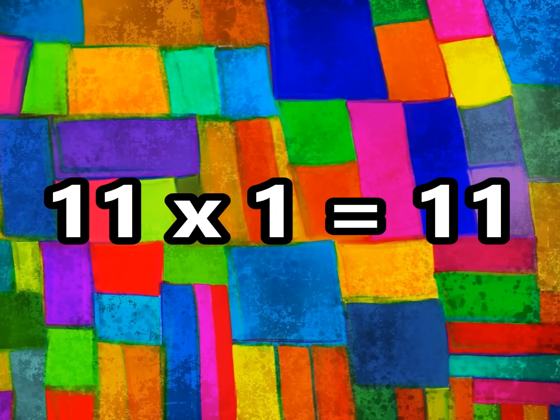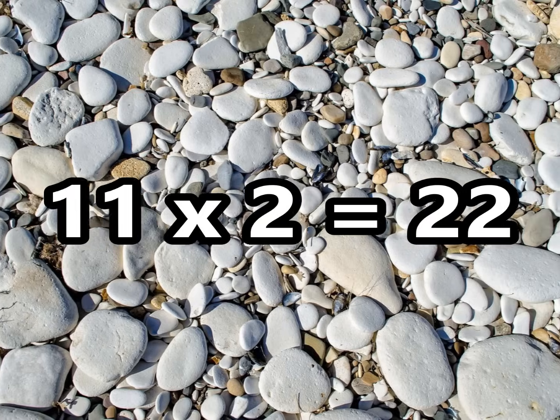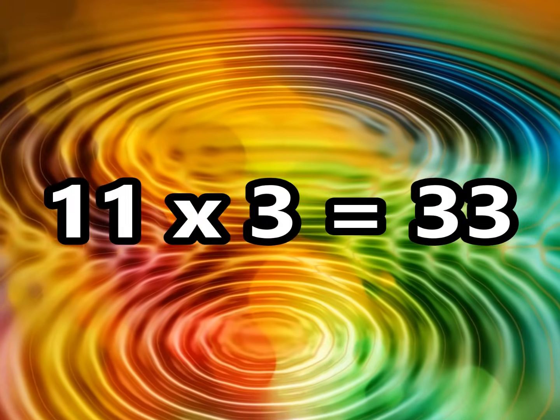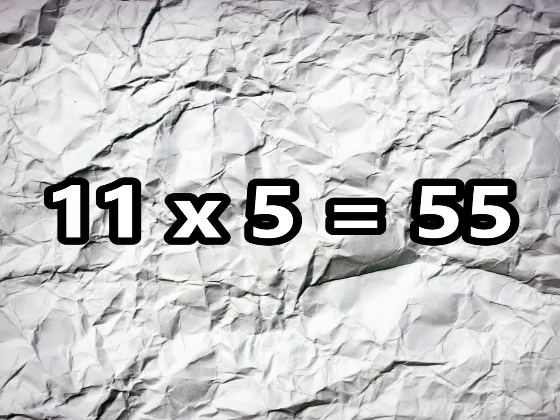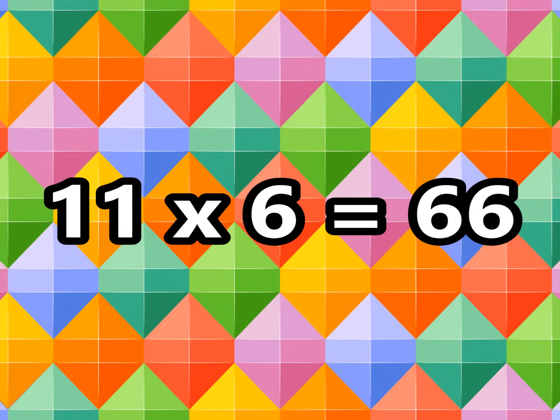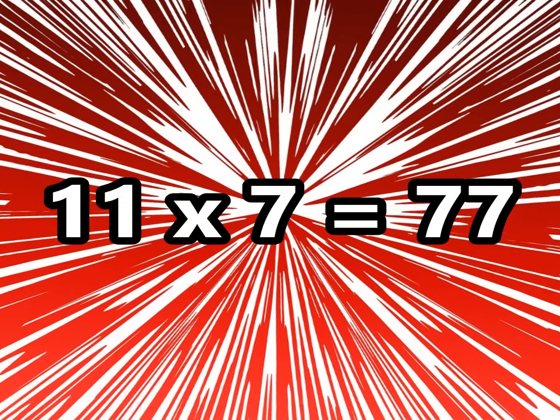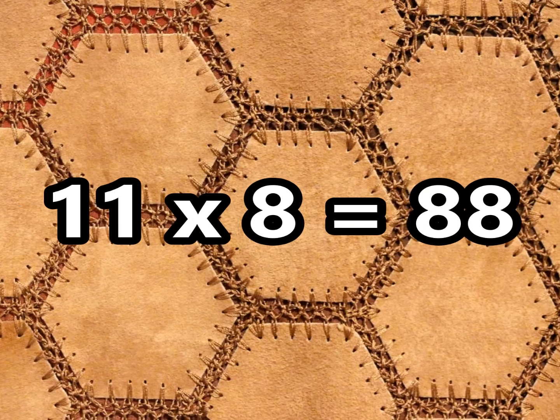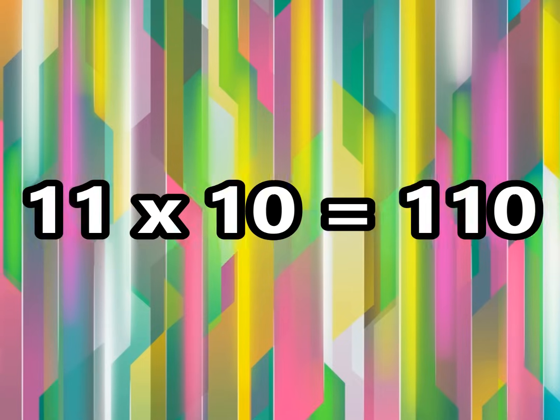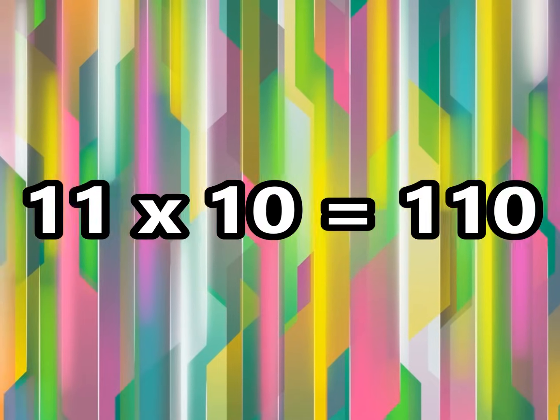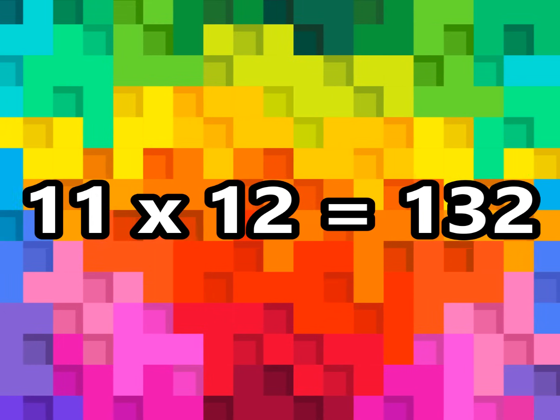11 times table. 11 times 1 is 11, 11 times 2 is 22, 11 times 3 is 33, 11 times 4 is 44, 11 times 5 is 55, 11 times 6 is 66, 11 times 7 is 77, 11 times 8 is 88, 11 times 9 is 99, 11 times 10 is 110, 11 times 11 is 121, 11 times 12 is 132.